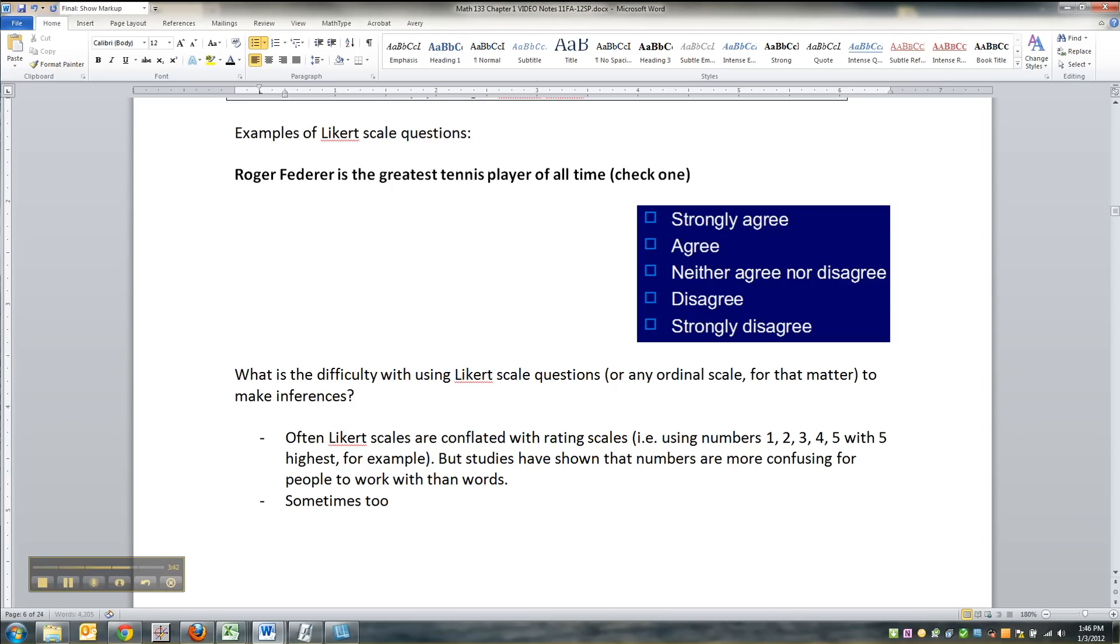Sometimes, too many options are listed. Like, for example, 1 through 10 for something is often unnecessary. An example of an opposite case might be movies, where that 10 scale rating is used a lot, but that's because we all have so much background going into it.